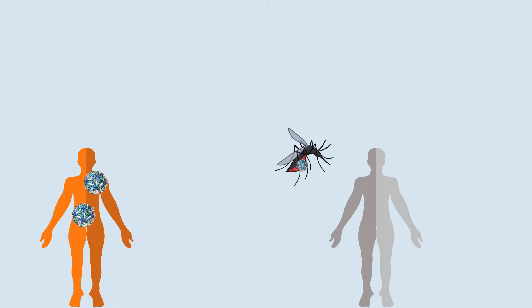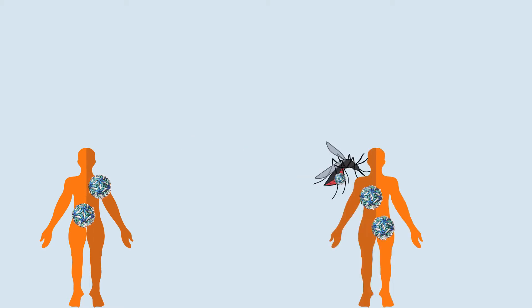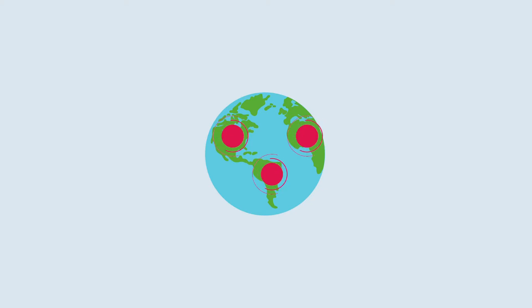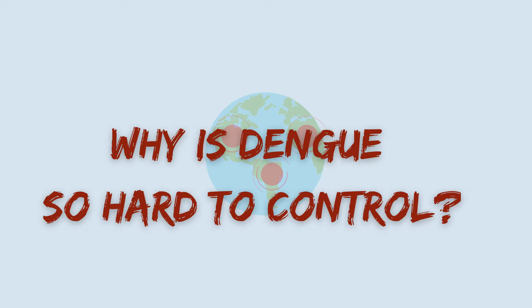The infected mosquito can then transmit the Dengue virus to another person by taking a blood meal. Dengue is an endemic disease, meaning that it happens regularly in certain areas. However, its occurrence is increasing at a rate higher than any other communicable disease. Why is Dengue so hard to control?